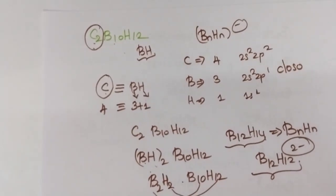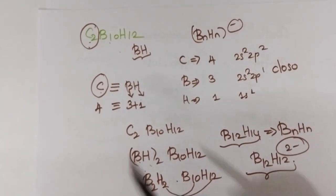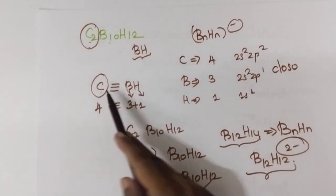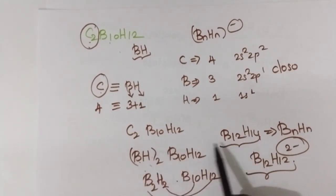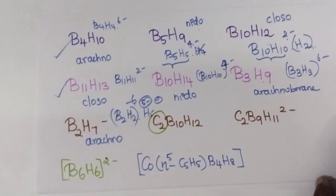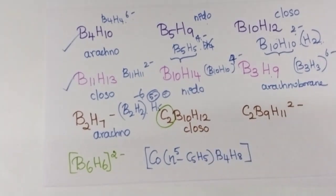This is how you have to solve this question. First, understand that 1 carbon is equivalent to 1 boron and 1 hydrogen because carbon has 4 valence electrons equal to 3+1. You replace the carbons by boron and hydrogen, converting the carborane into borane form. After that it is very simple: write it in BnHn format, and the power 2 minus gives closo borane structure.